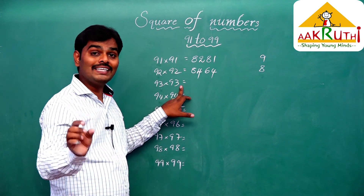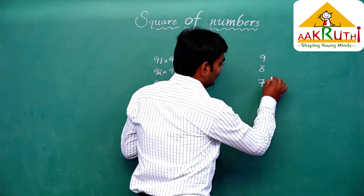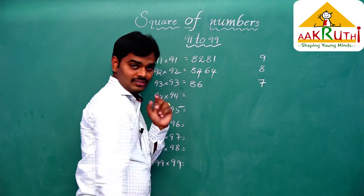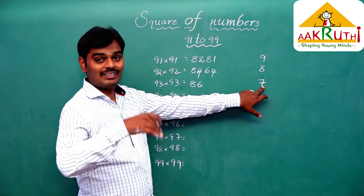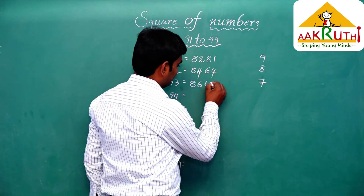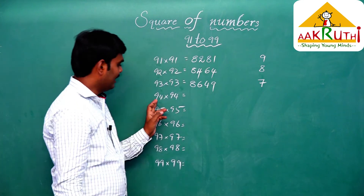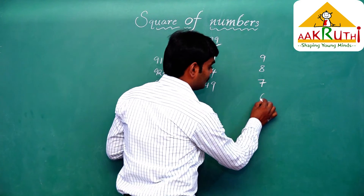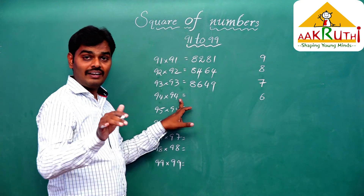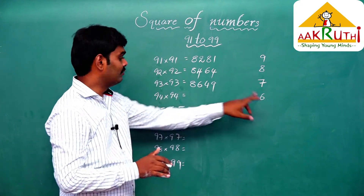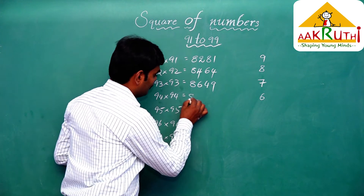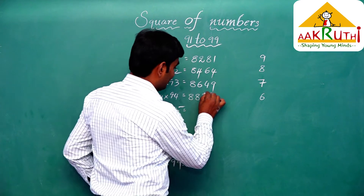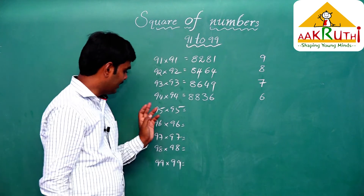Now 93 into 93: 93 is 100 minus 7. And 94: 94 is 100 minus 6. The first step is 94 minus 6, which is 88. The second step is 6 squared, which is 36. So 94 squared equals 8836.